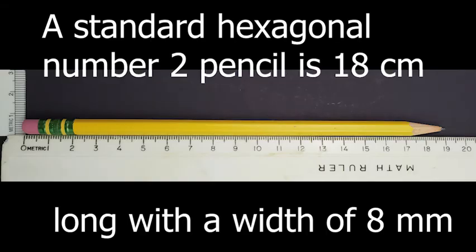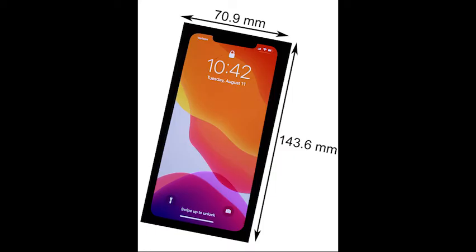A standard hexagonal number 2 pencil is 18 centimeters long with a width of 8 millimeters. An iPhone XS measures 143.6 millimeters by 70.9 millimeters and weighs 177 grams.